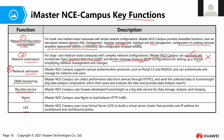The next feature is network admission, which means that NCE Campus is able to support various authentication protocols such as Portal 2.0, RADIUS, and RADIUS. NCE Campus can act as the authentication server to provide authentication, or it can also work with a third-party server to provide authentication. The fourth feature is OMM monitoring. For OMM monitoring, NCE Campus will collect performance data from devices using HTTP 2.0, and this data will be collected and sent to Fusion Insight.